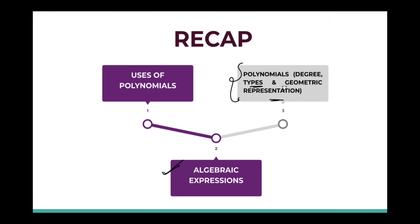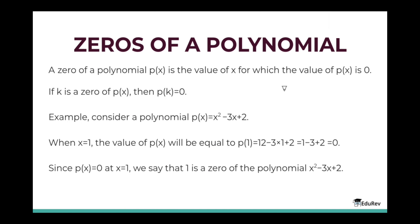We will start with the topic zeros of a polynomial. A zero of a polynomial p(x) is the value of x for which the value of p(x) is zero. If k is a zero of p(x), then p(k) is equal to zero. Here, p(x) is how we represent a polynomial — the polynomial is a function of x. Any value of x that makes the polynomial zero is known as a zero of a polynomial.